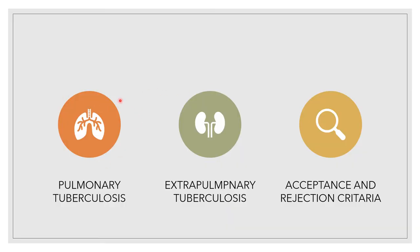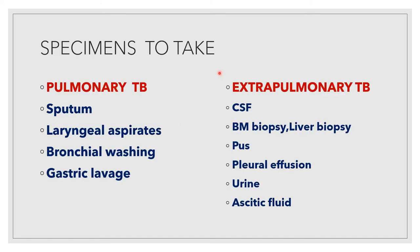There can be pulmonary tuberculosis and extra-pulmonary tuberculosis. In case of pulmonary tuberculosis, the specimens to be taken are sputum, laryngeal aspirate, bronchial washing, and gastric lavage. Gastric lavage is taken in children who are unable to produce sputum.